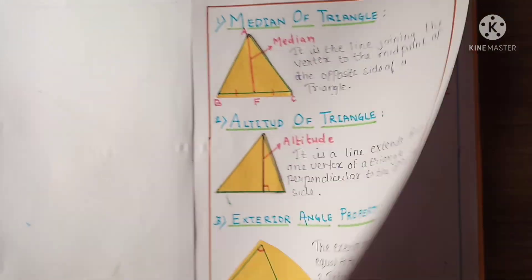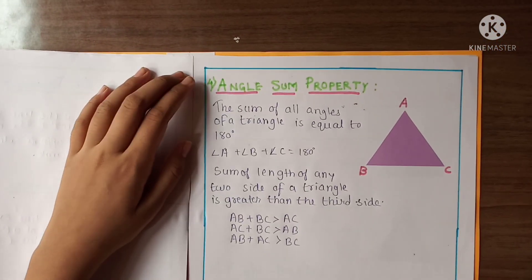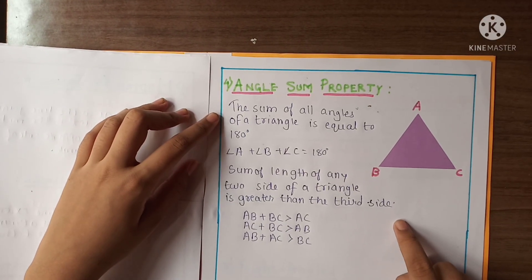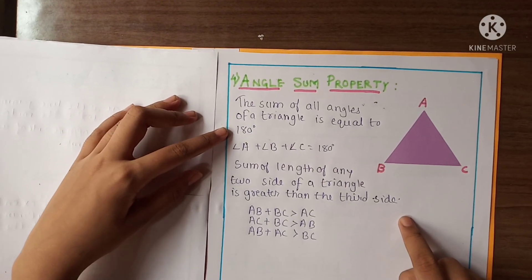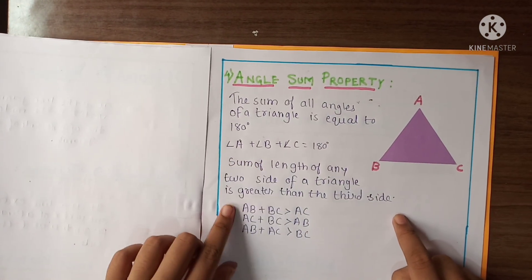Let's see the next. Here fourth number is the angle sum property. Here is the diagram of a triangle. The sum of all angles of a triangle is equal to 180 degree. Angle A plus angle B plus angle C is equal to 180 degree.